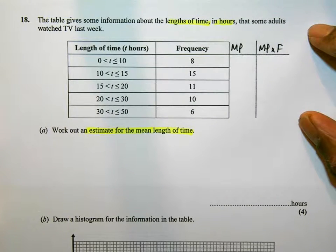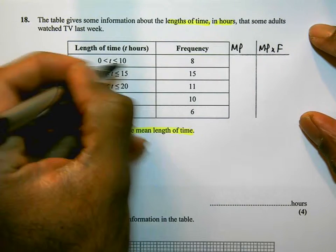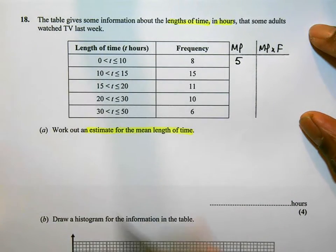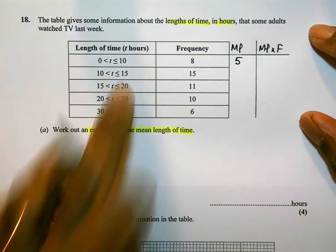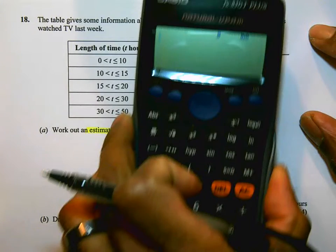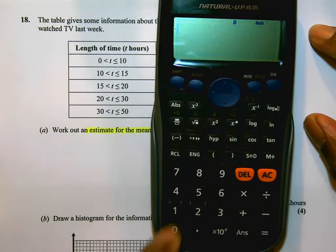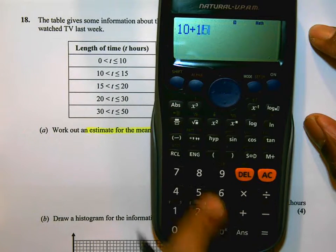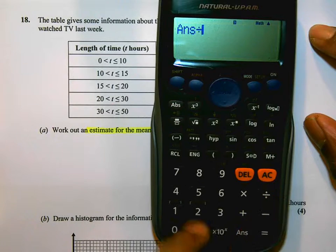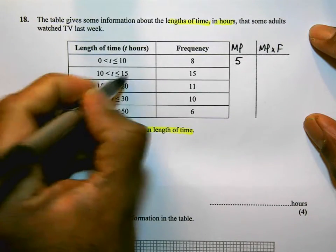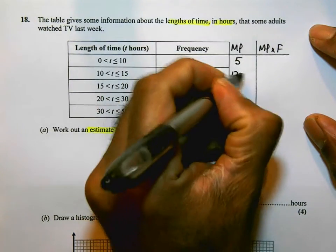So finding the midpoints of each of the groups. The first midpoint is going to be between 0 and 10, which is 5. The second midpoint is between 10 and 15. Now if you do find that difficult, one way of working out the midpoints is to add the two values, 10 and 15, that gives you 25, and then divide it by 2. That gives me 12.5. So the midpoint of this group is 12.5.